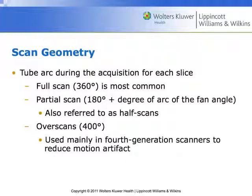Scan geometry: the tube is going to arc during acquisition for each slice. It's going to make a complete rotation around the gantry — a full translation of 360 degrees is very common. Sometimes we might do a partial translation. We might also over-scan, which allows the scanner to directly overlap — this is very uncommon but used for very high spatial resolution needs. Typically, we can reconstruct and make up the gap in the data through interpolation rather than over-scanning and irradiating the patient more.